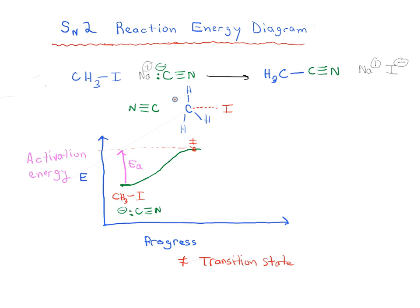And in the process, we're going to start to form a carbon-carbon bond and start to break the carbon-iodine bond. We sort of form this five-membered transition state where the carbon has five things sort of attached to it.